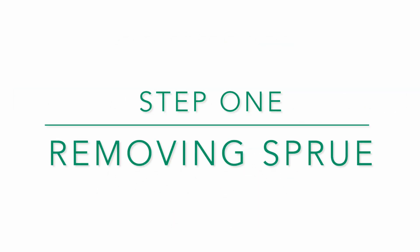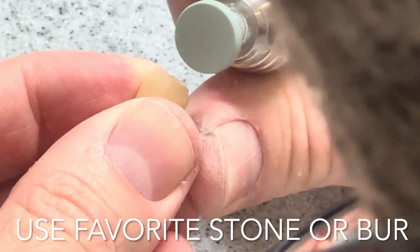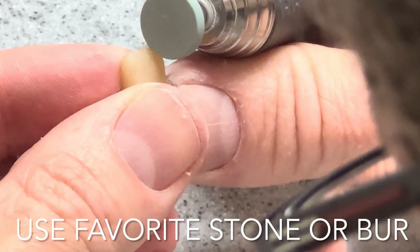For step one, removing the sprue, you're going to use your favorite stone or burr to remove the sprue and finish down to your desired contour.